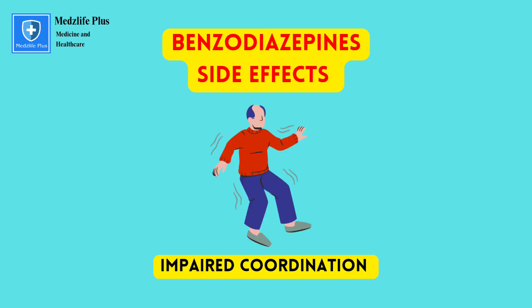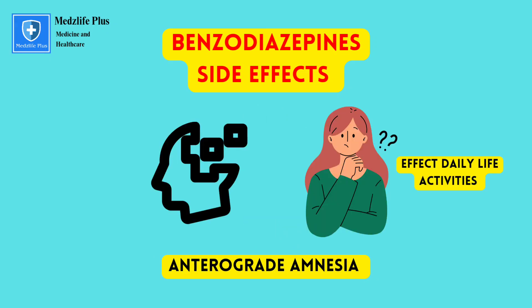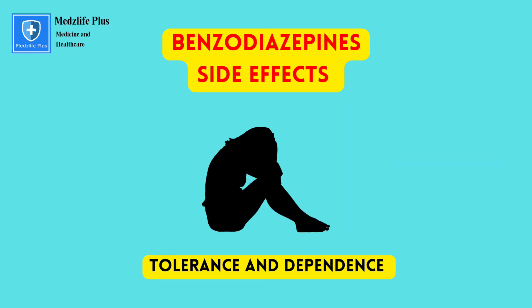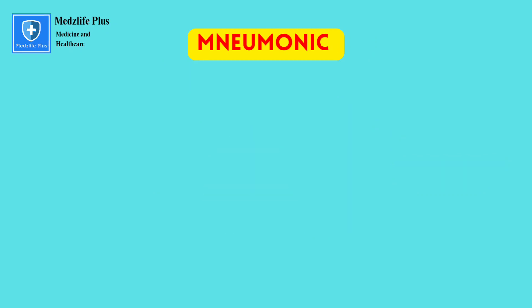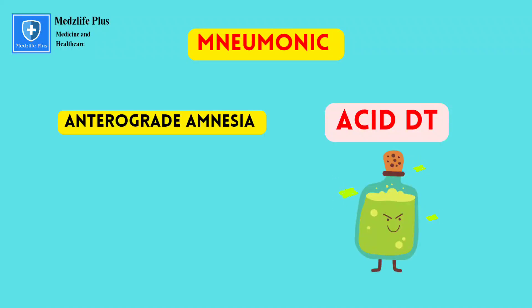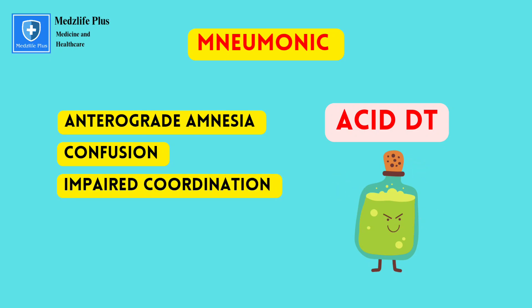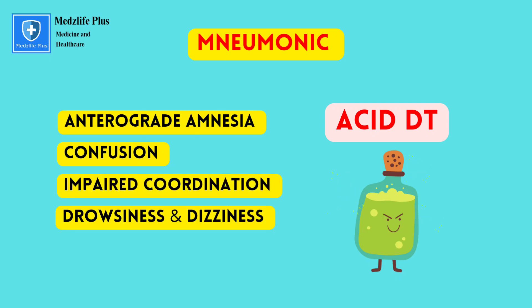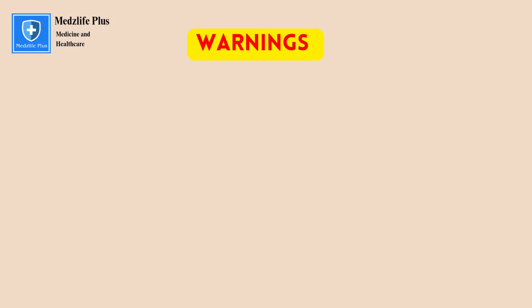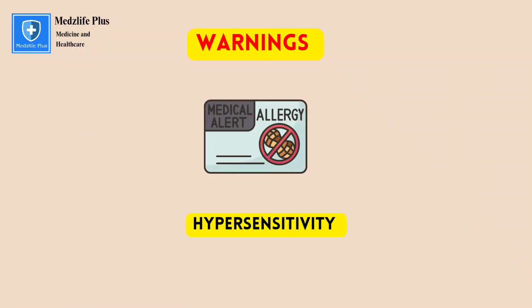The side effects of benzodiazepines include drowsiness and dizziness, dependence, confusion, impaired coordination, anterograde amnesia, and tolerance. A helpful mnemonic is ACID DT: A for anterograde amnesia, C for confusion, I for impaired coordination, D for drowsiness and dizziness, D for dependence, and T for tolerance.